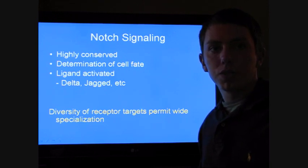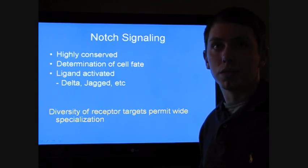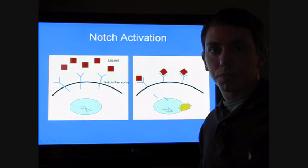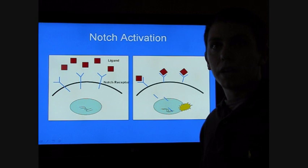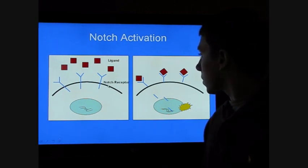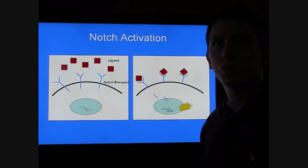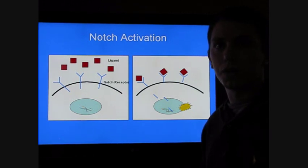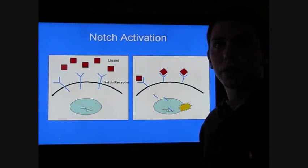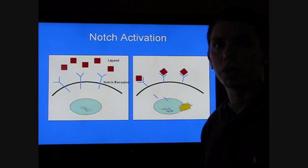The Notch family are cell surface receptors that are activated by ligand binding. Commonly associated are delta and jagged ligand molecules. Upon binding, the intracellular portion of the Notch receptor is cleaved and enters the nucleus, where it influences the expression of numerous transcription factors and ultimately changes expression of genes responsible for the specialization of glial lineages. The multiple target effectors present Notch with the capability to mediate a wide range of events leading to a large number of specialized lineages.